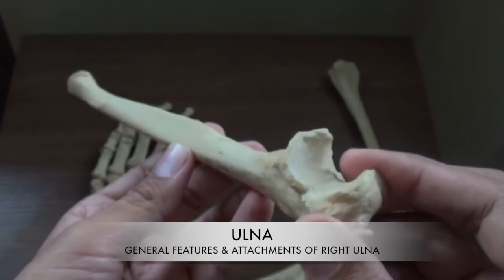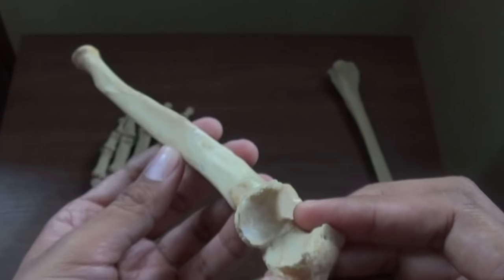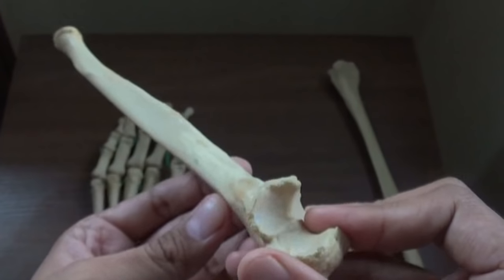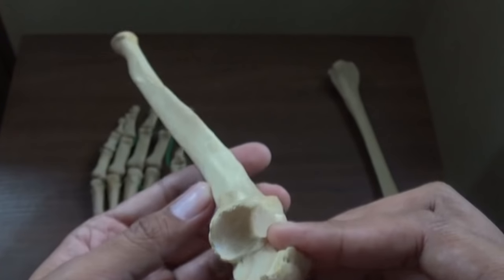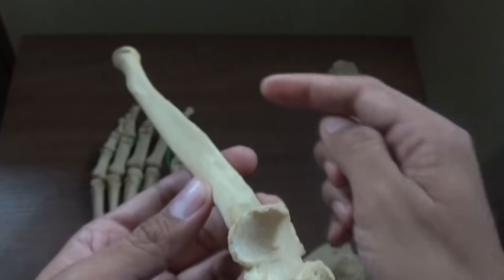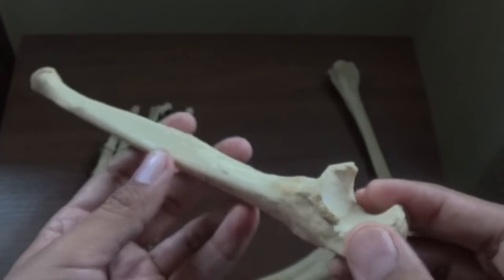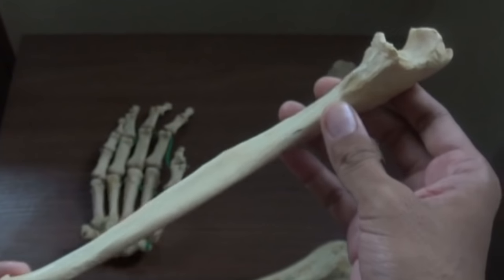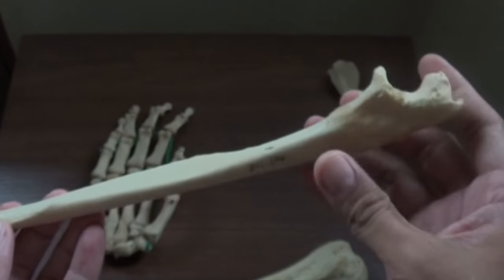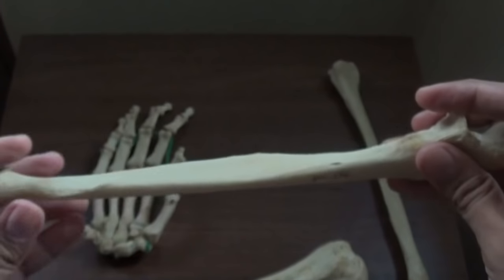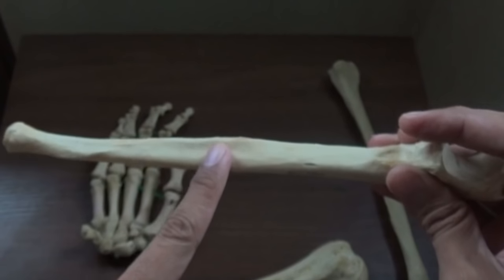Let's learn today the general features and attachments of the ulna. The ulna is a medial bone of the forearm, homologous with the fibula of the leg, and is considered a post-axial bone of the forearm. As a typical long bone, it has two ends — upper and lower — and an intervening shaft with three borders and three surfaces.